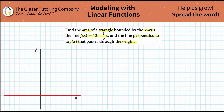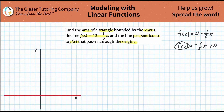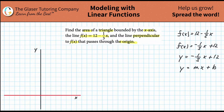Remember that f of x equals 12 minus one-third x is the same thing as f of x equals negative one-third x plus 12 — all I did was rearrange those items. And remember, f of x is just like y. So doesn't this look like y equals mx plus b, with slope negative one-third and y-intercept 12? Yes, it does.